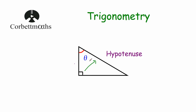Now let's label our next side of the right-angled triangle. Whenever you're doing a trigonometry question, you're either trying to find, or you're going to be using, an angle in the question. So let's look at this angle — this is the angle we're considering at the top here. The side opposite that angle is called the opposite. So that means that the side at the bottom here is called the opposite. So that's two of our sides labelled.